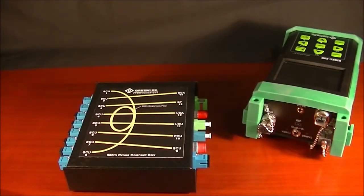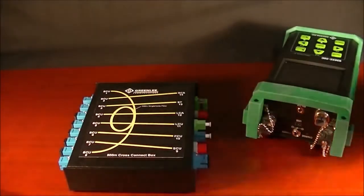This video shows how to demonstrate the 930 XC OTDR from Greenlee Communications using the 500 meter cross connect box. First we have to connect the OTDR to the cross connect box.